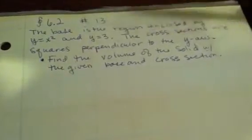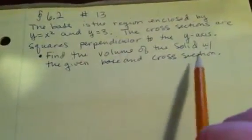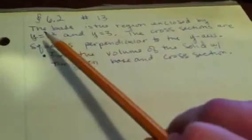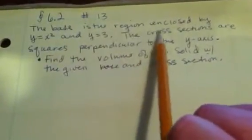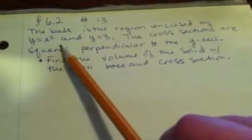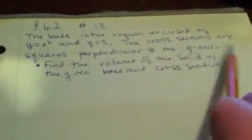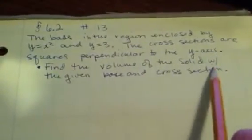Alright, so we have 6.2 number 13. The instructions say find the volume of the solid with the given base and cross section. For number 13, they say the base is the region enclosed by y equals x squared and y equals 3. The cross sections are squares perpendicular to the y-axis.